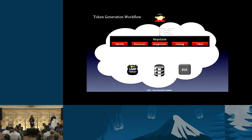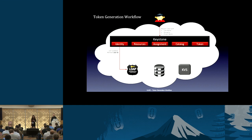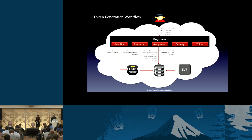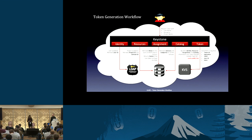If I want to get a UUID token, I initiate a request with my credentials and the target project. Keystone validates my identity, gets the project ID, gets the list of roles I have on the target project, and gets the list of services and endpoints. It bundles all this information into a token payload in JSON format, creates a UUID, and all of this is stored in the token backend.